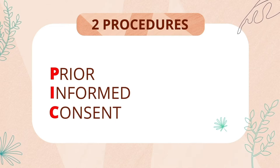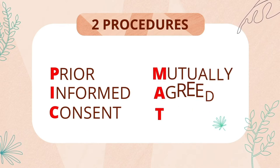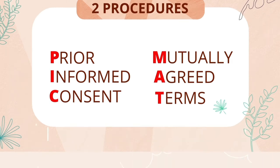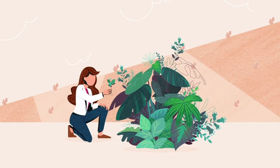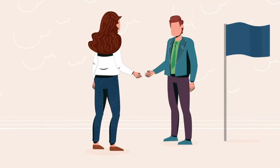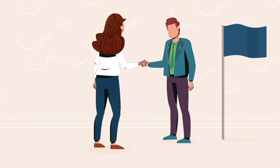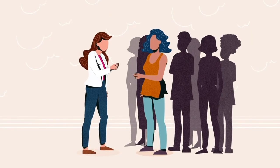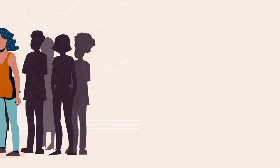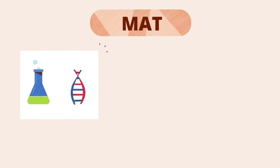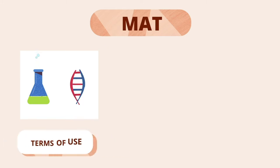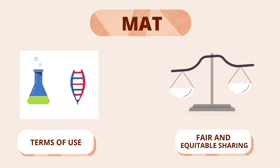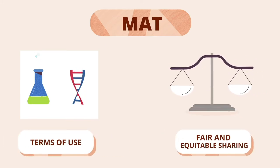PIC, prior informed consent, and MAT, mutually agreed terms. PIC is the consent of the provider country for access to resources, or of the local communities for access to the associated traditional knowledge. MAT is a contract that defines the conditions of use of materials or knowledge and the fair and equitable sharing of the benefits arising from their use.